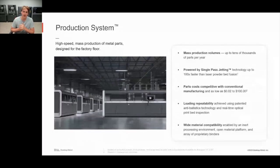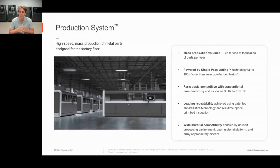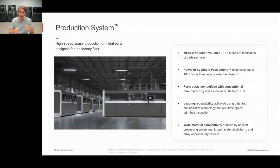The Production System is a large industrial machine designed for high-speed mass production — up to tens of thousands, even millions of parts per year depending on geometry. It's 100 times faster than laser powder bed fusion thanks to single-pass jetting. Part costs are competitive with conventional manufacturing, it has incredible repeatability thanks to anti-ballistics technology and real-time optical print bed inspection, and the widest material compatibility thanks to an inert printing environment and open material platform.